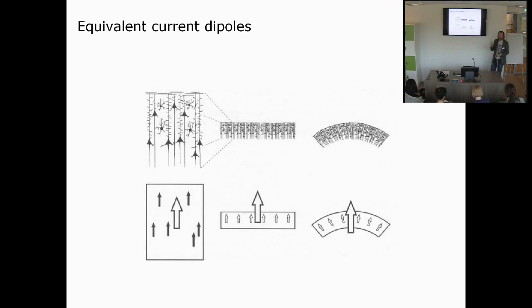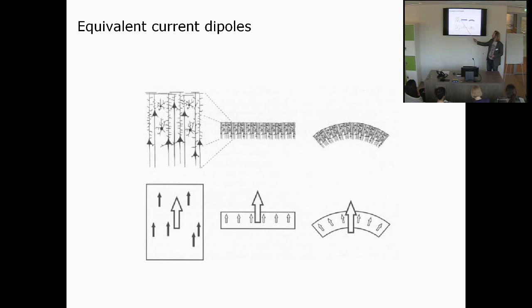We don't model each individual neuron separately because we don't have that spatial resolution. Instead, we take a column and say that all the small equivalent current dipoles can be simplified using a single larger equivalent current dipole. We can take this further: a piece of cortical sheet where each column is represented as an equivalent current dipole can again be simplified to one larger dipole. Relatively large patches of cortex can be modeled this way because we're recording from quite a distance, so we don't see the small detail in a cortical sheet.